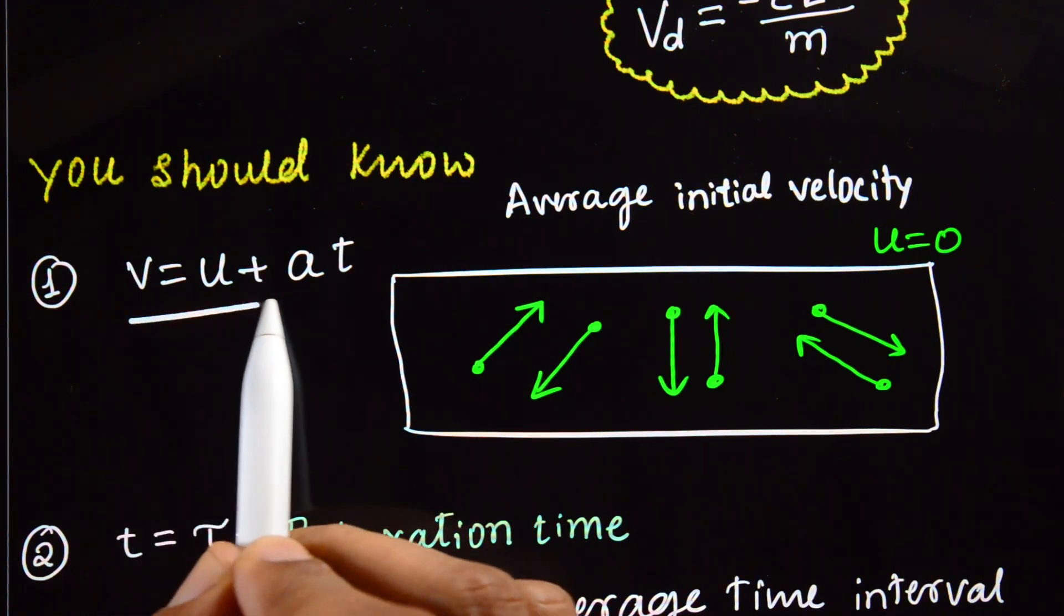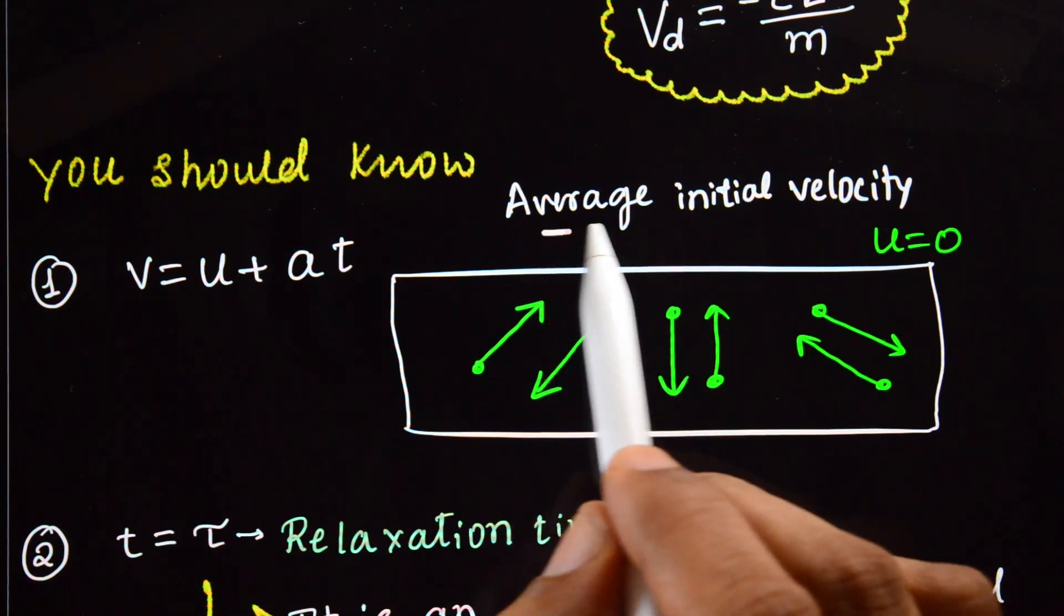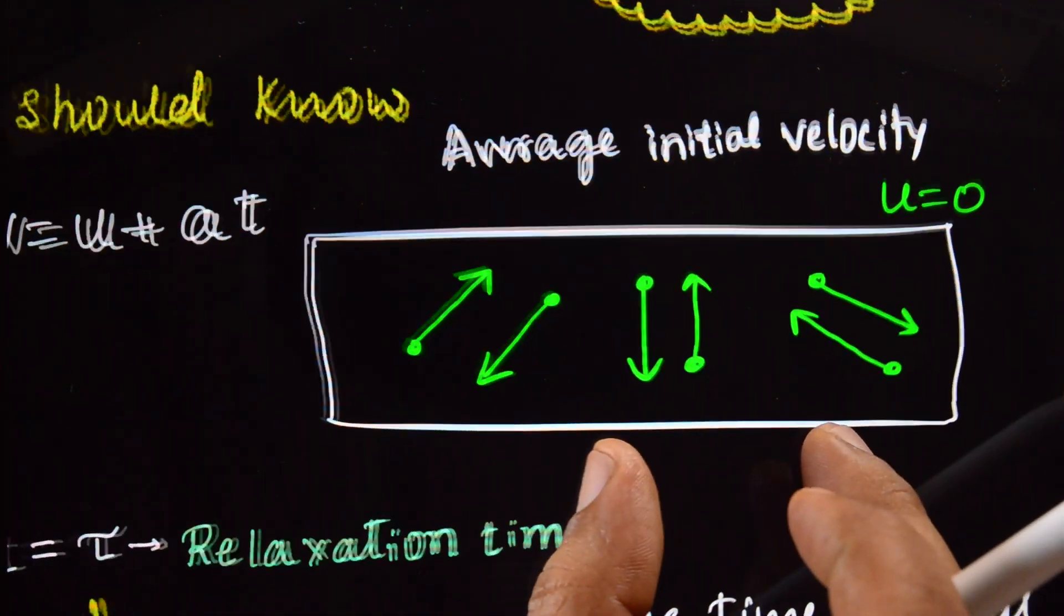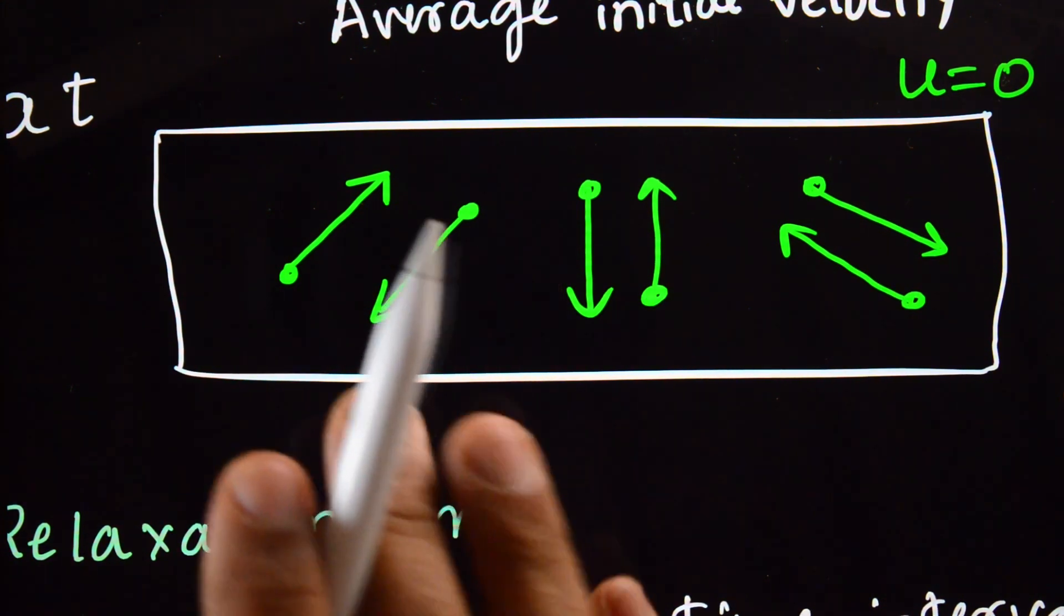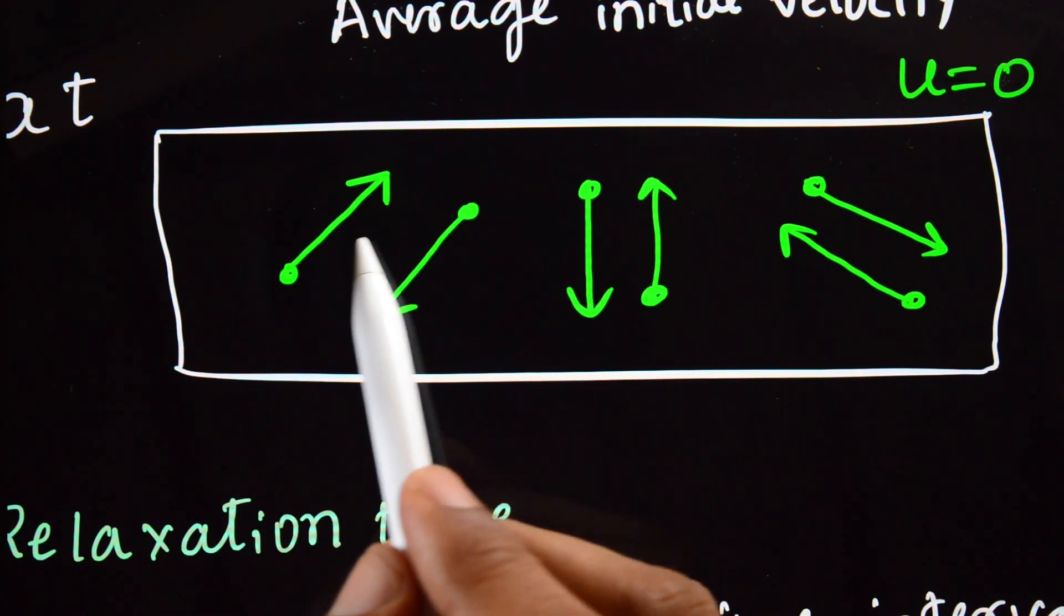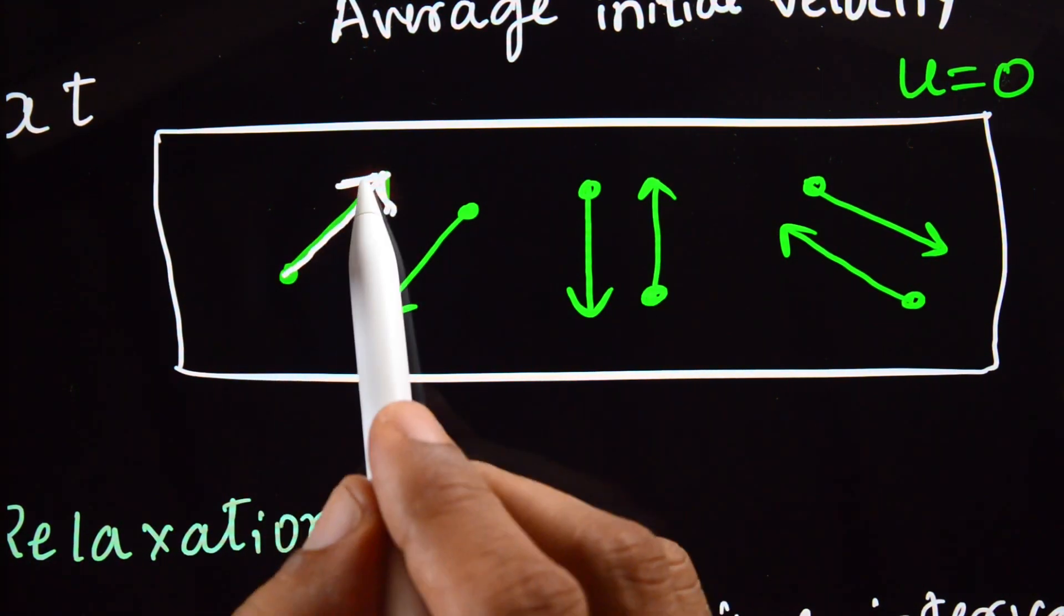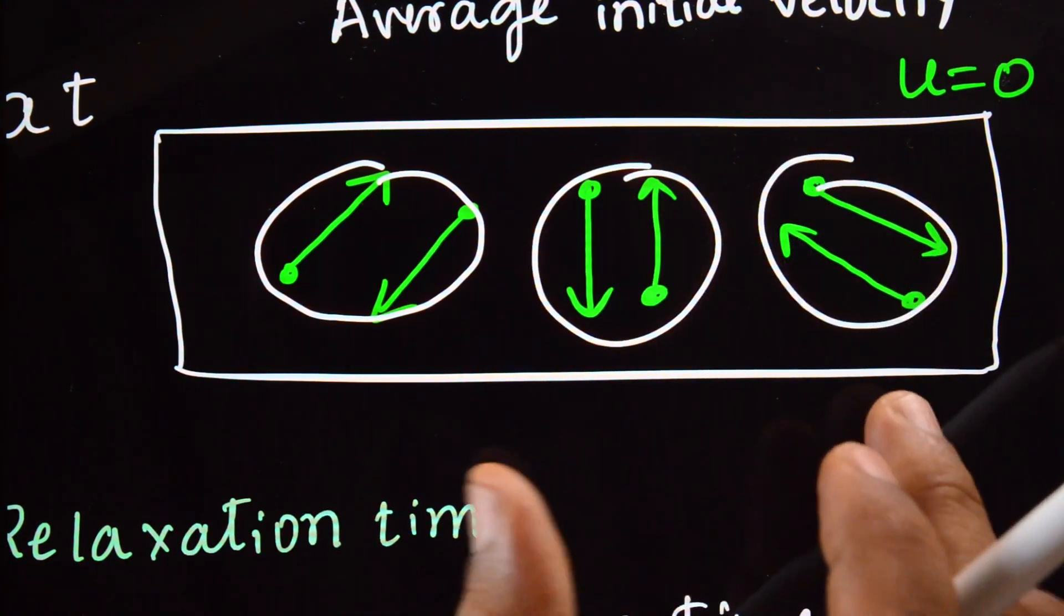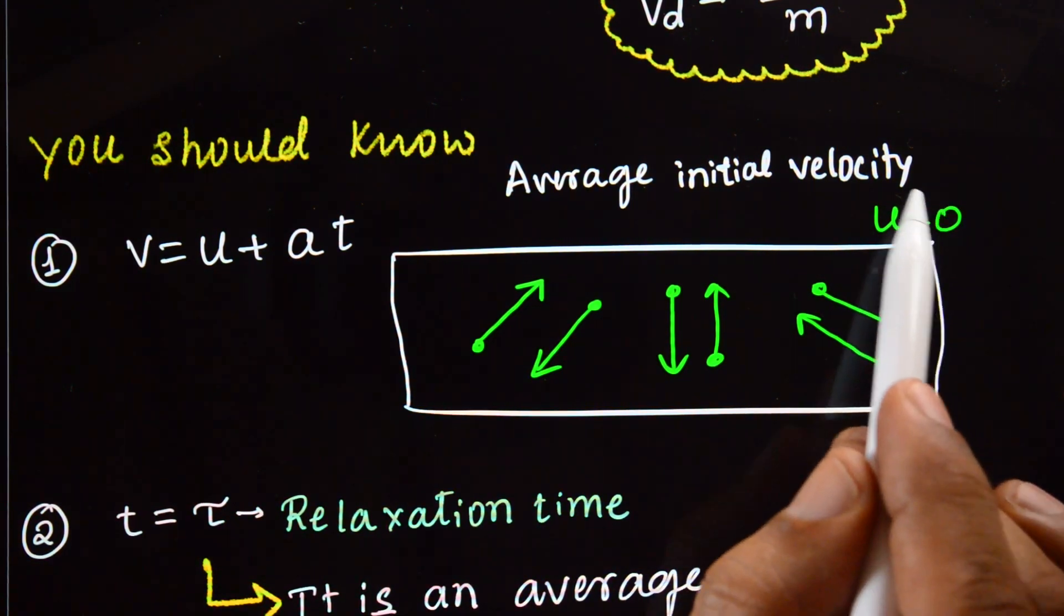The formula v equals u plus at - you should know this. Here, the average initial velocity of free electrons is zero. Suppose this is a conductor. Because of temperature, if the temperature is more than zero Kelvin, electrons are moving randomly. One electron moves at 10^-4 kilometers per second in this direction, another in that direction. The average velocity of all the electrons is zero because of temperature or thermal agitation. That is, initial velocity u equals zero.